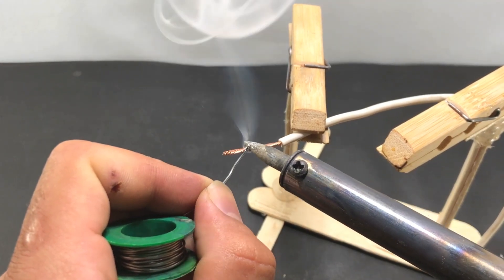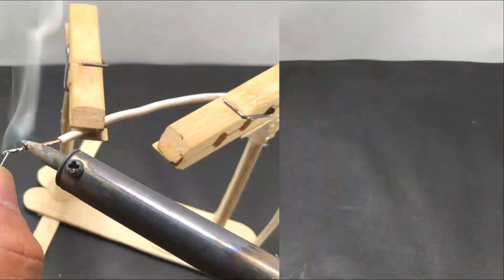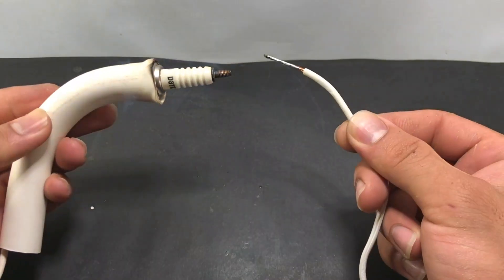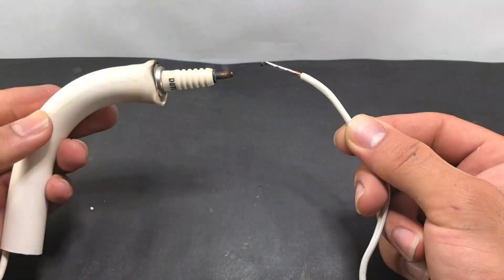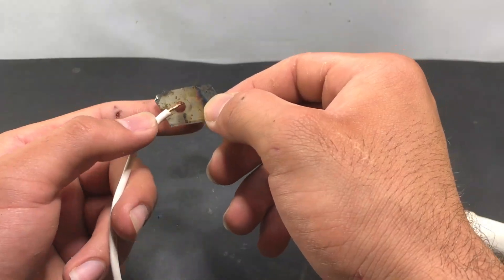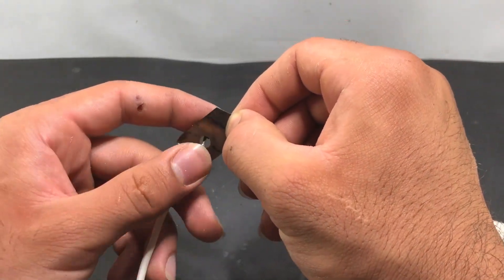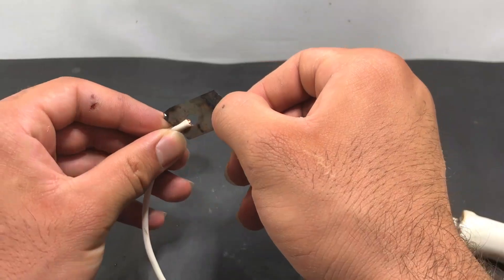Cover the negative wire with solder wire. Connect the adapter to the power outlet and see the result. And it is time to weld.